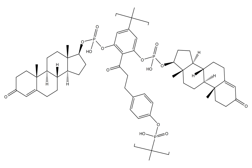As such, two testosterone moieties essentially hang or dangle off of each fluorotin unit in the polymer, and these testosterone moieties are slowly cleaved from the polymer.